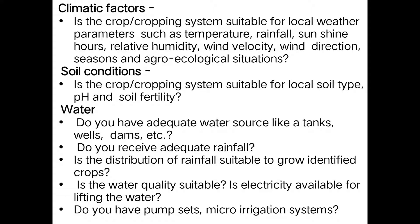The next factor is water. The farmer must consider whether they have adequate water sources like tanks, wells, or dams; whether they receive adequate rainfall; whether the distribution of rainfall is suitable to grow the identified crops; whether water quality is suitable; whether electricity is available for lifting water; and whether they have a pump set or micro-irrigation system.